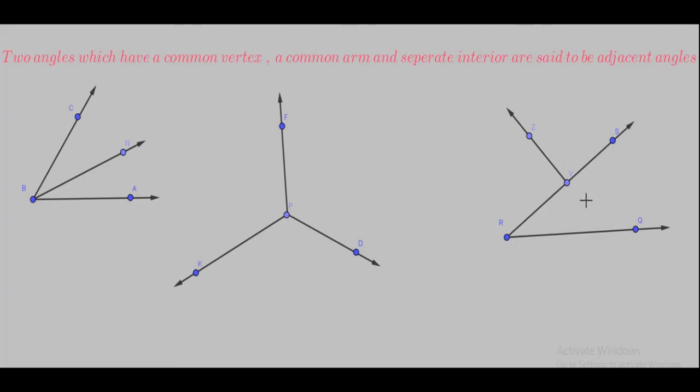These conditions make them adjacent angles. For example, ZVS and SRQ can also be checked similarly.